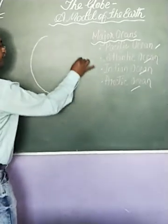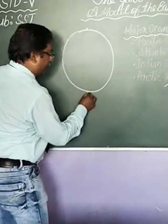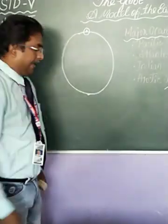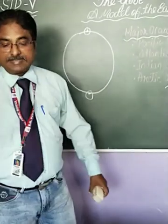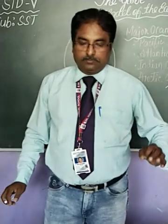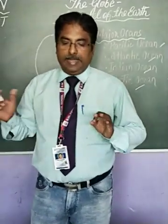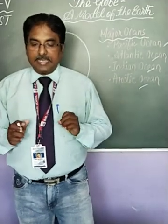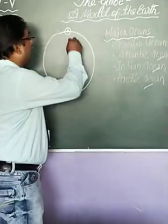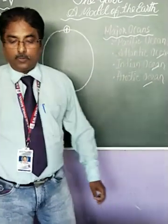Suppose this is the globe — it has two end points. One point is here and one point is here. This point is called the North Pole and this point is called the South Pole. There is an imaginary line that joins the North Pole with the South Pole.